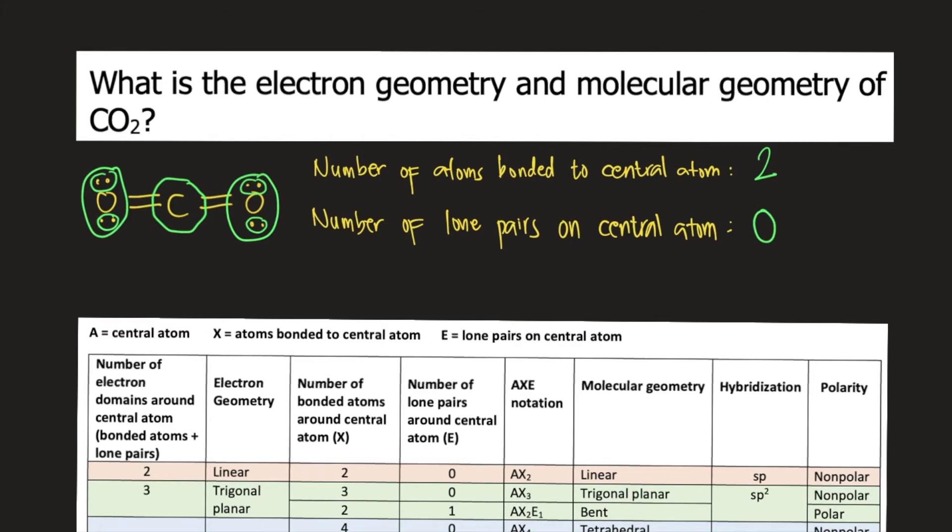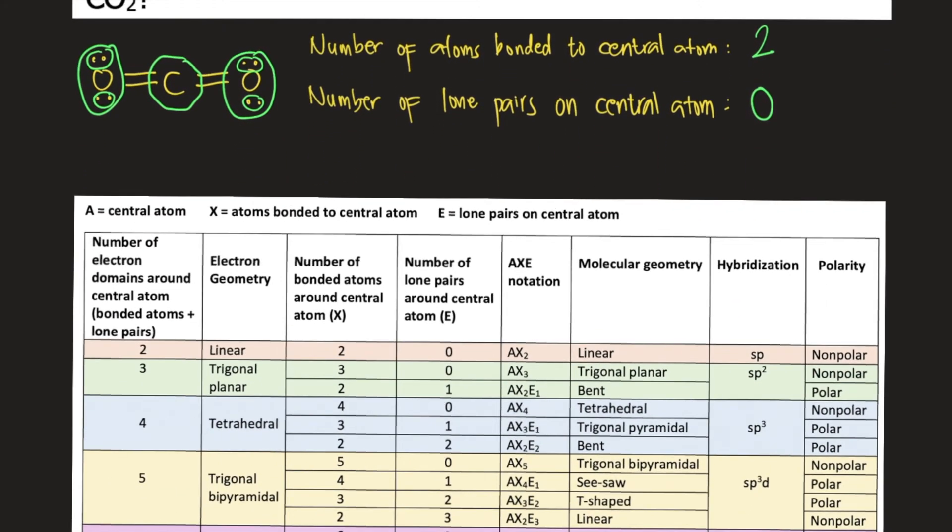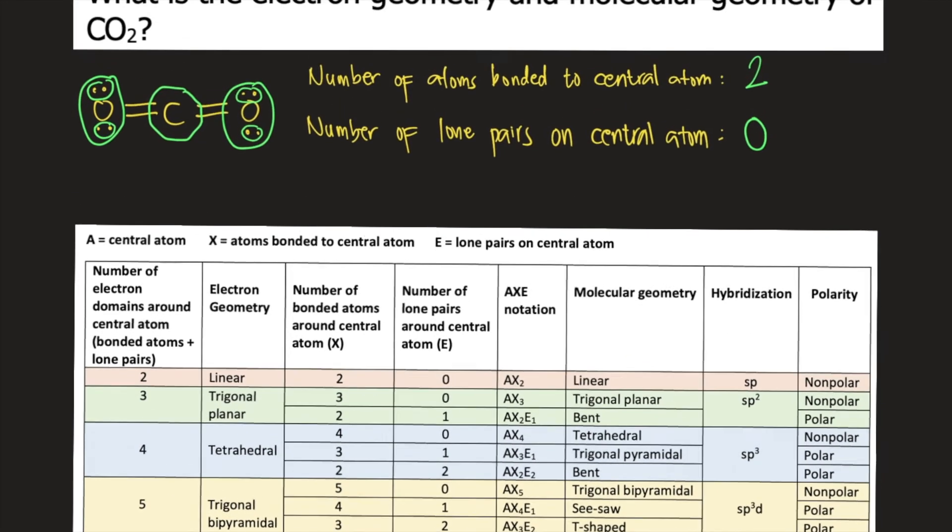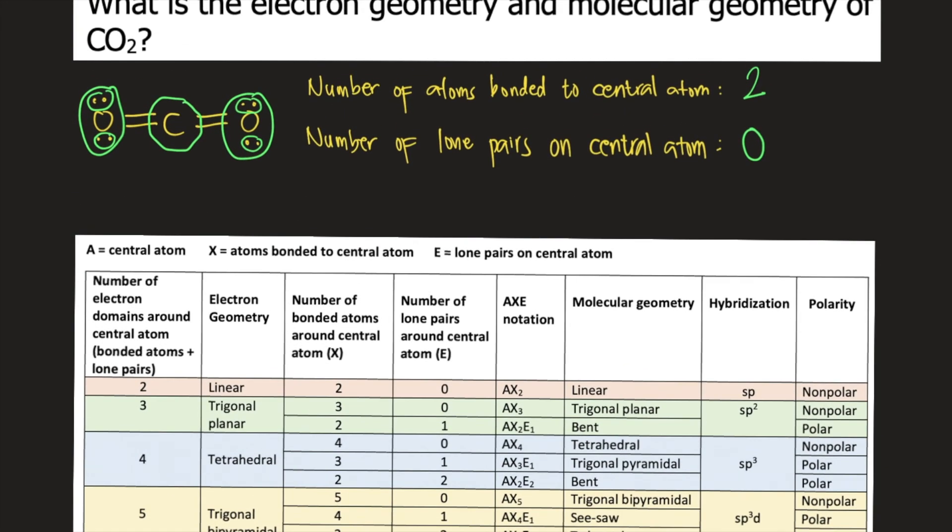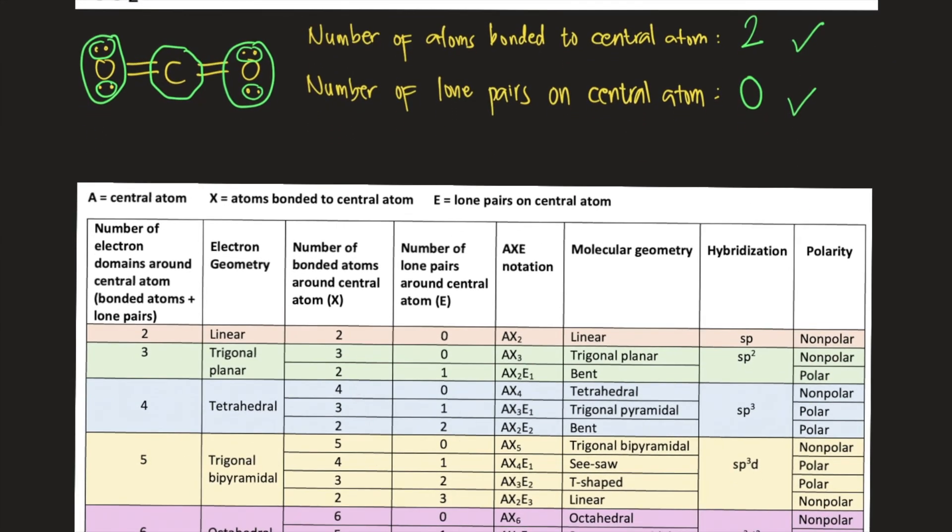I have attached a table that summarizes the electron geometries and molecular geometries. Based on our answers from the previous steps, we have two bonded atoms to the central atom and zero lone pairs on the central atom. Now, look at columns three and four.